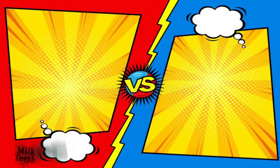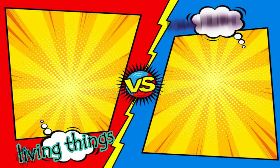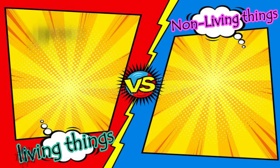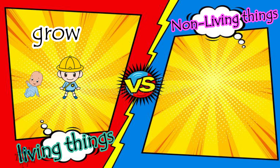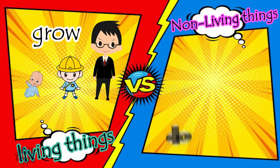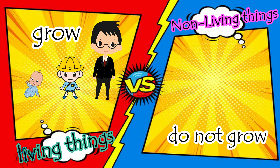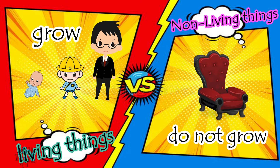The first difference between living things and non-living things is that all living things grow. A baby, for example, grows into a little boy and then into an adult human being. Non-living things, on the other hand, do not grow. Look at this chair — will it ever grow in size? No, it will not. It shall remain the same always.